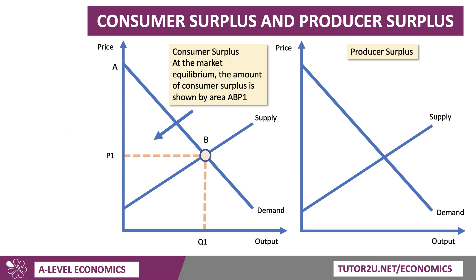Consumer surplus is the area underneath the demand curve and above the price, because there are some people who are willing to pay more than P1 for that product. So that's the area A, B, P1 — that's consumer surplus, the area below the demand curve and above the price. That point A is quite significant — that point where the demand curve cuts the Y-axis suggests there's a maximum willingness and ability to pay. That's the top price that can be charged for, if you like, the first consumer, if the product was extremely scarce in the market.